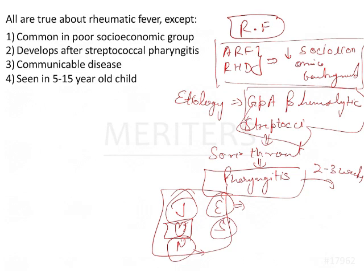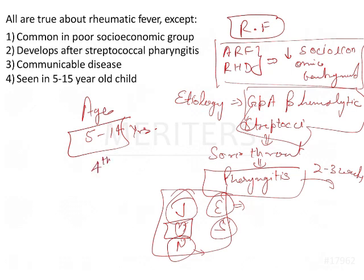The age group most commonly associated with this disease is five to fourteen years of age — patients have more predilection for this disease in that age range, although it can be seen in patients up to the fourth decade as well.